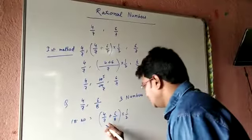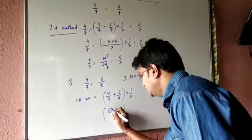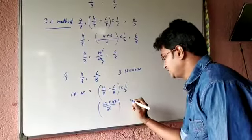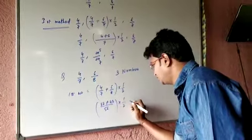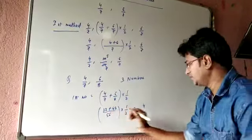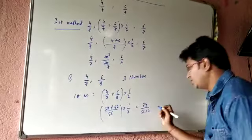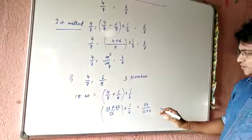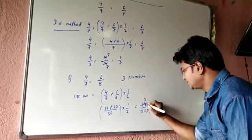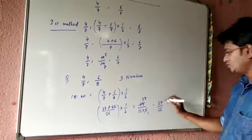The LCM of seven and eight is 56. So four by seven becomes 32 by 56, and six by eight becomes 42 by 56. Adding: 32 plus 42 is 74, divided by 56, then multiplied by one by two gives 74 by 112, which simplifies to 37 by 56. So the first number we have found is 37 by 56.